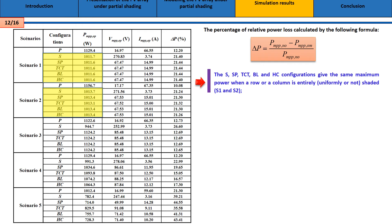We can conclude that the SP, TCT, BL, and HC configurations give the same maximum power when a row or a column is entirely shaded.